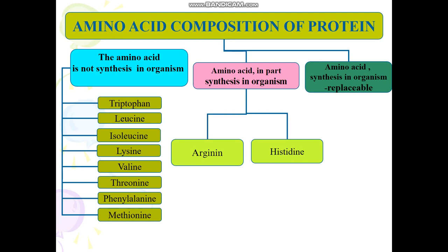Histidine has a main role in hemoglobin formation and in conditioned reflex activity. Phenylalanine is related to the thyroid and adrenalin system. Isoleucine is a component of body protein and hemoglobin. The lack of histidine causes growth retardation and weight loss in animals, as well as disorders in the kidney and gut.